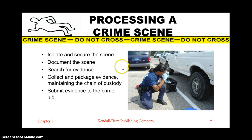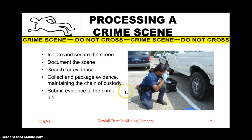When processing a crime scene, it's important that certain steps are followed in a specific order. One of the very first steps is isolation and securing the scene so that no one contaminates any of the evidence. Then documenting the scene — which could be recording, video recording, photographing, or drawings. Then searching for evidence, collecting and packaging evidence, maintaining the chain of custody, and submitting evidence to the crime lab.